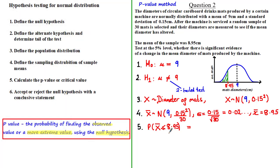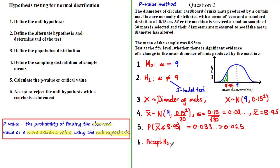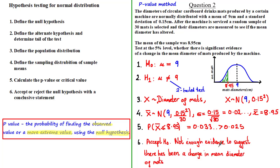Given that P(X̄ ≤ 8.95) = 0.033, we compare this p-value with the significance level of 2.5% (half of 5%). Since 0.033 is greater than 0.025, the p-value is large in this context. Since the p-value exceeds the significance level, we accept the null hypothesis — there is not enough evidence to suggest that there has been a change in the mean diameter of the mats.